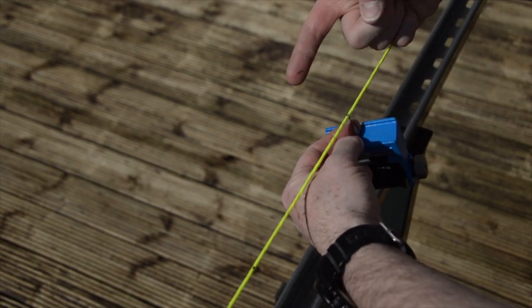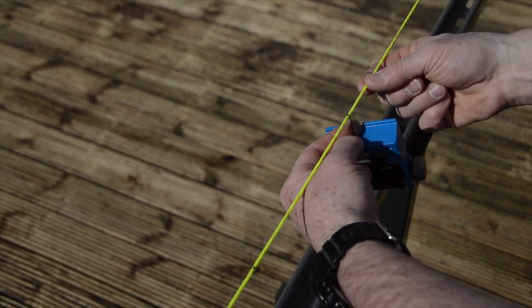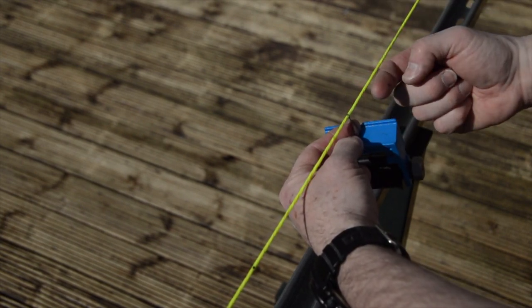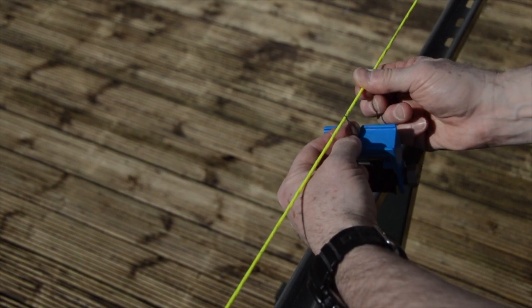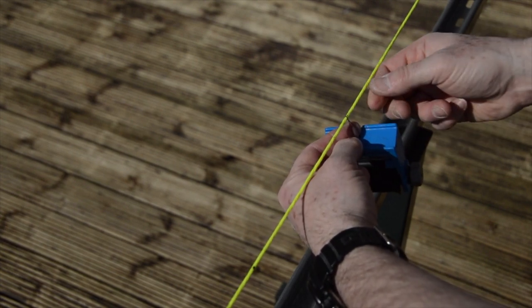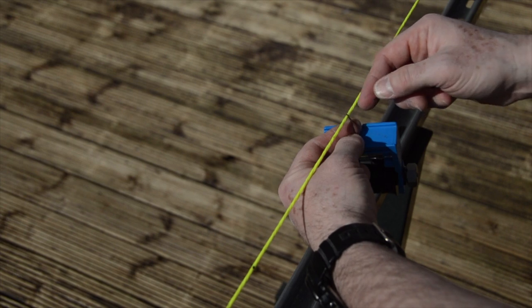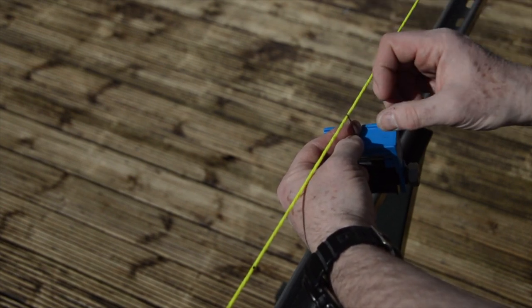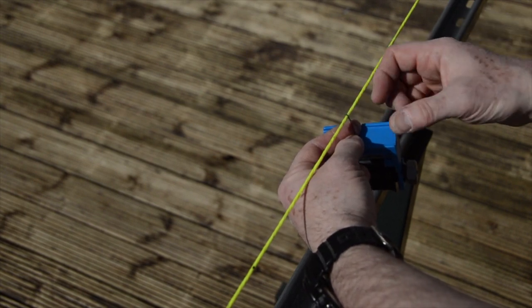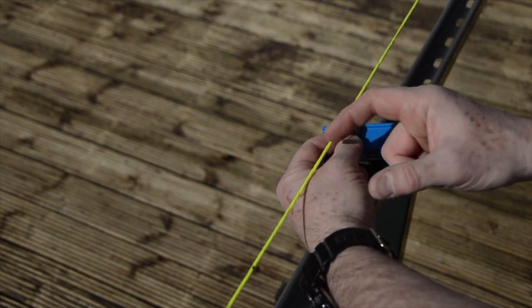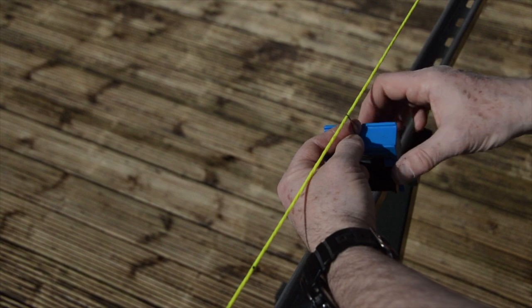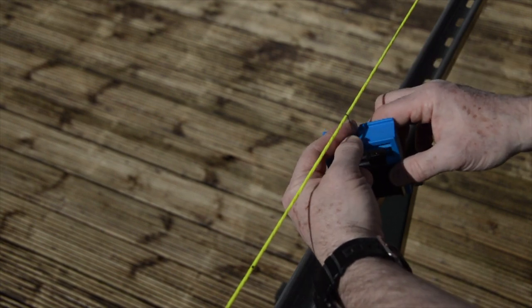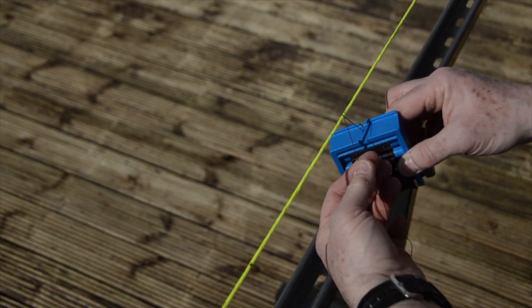I'm going to be serving away from me. Set up the twist in the string so as I serve, I'm actually twisting the string up rather than untwisting it. That's important because if I'm serving against the twists, the serving will come loose over time. I've got a tight hold of the tail end here.